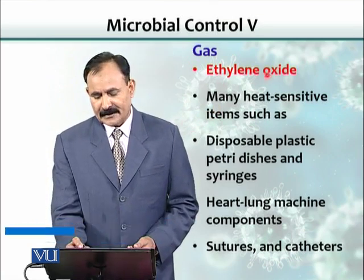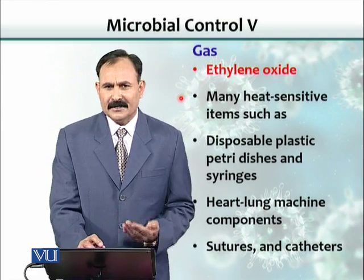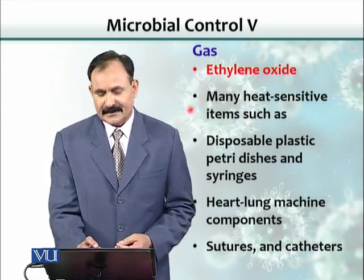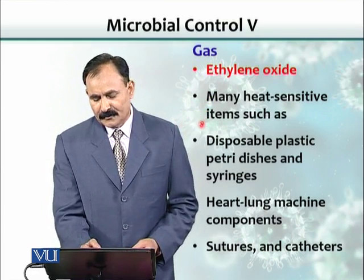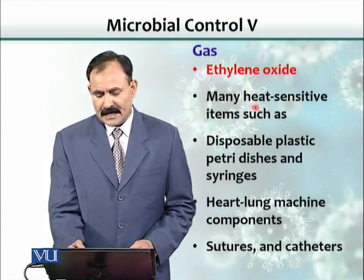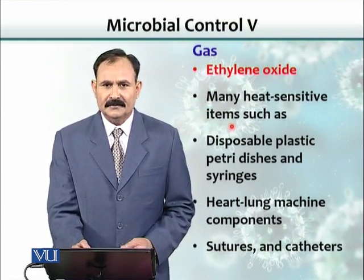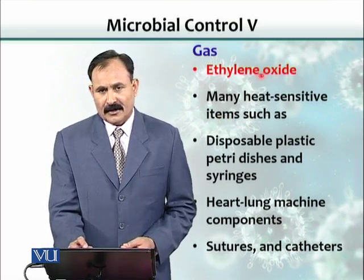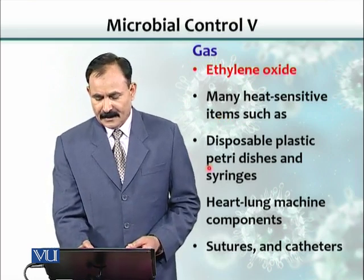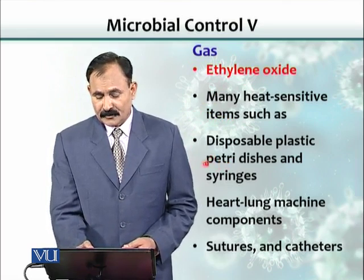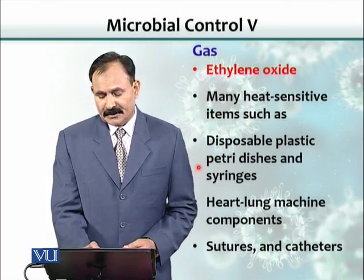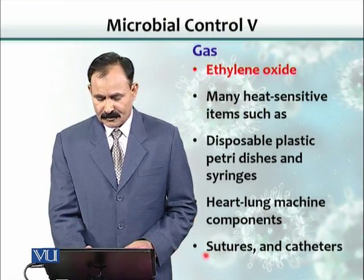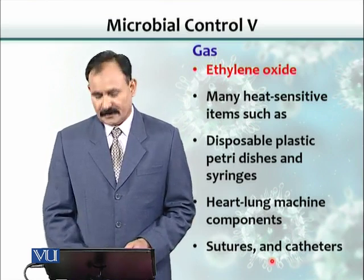Ethylene oxide is a kind of chemical treatment, but because it exists as a gas, we can use it for sterilizing many heat-sensitive items. Those objects could include disposable plastic petri dishes, syringes, and many other medical supplies such as sutures and catheters.